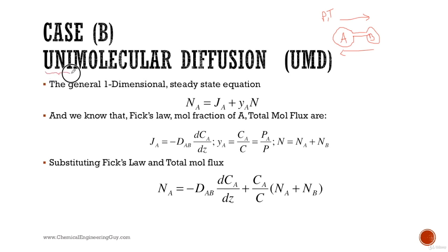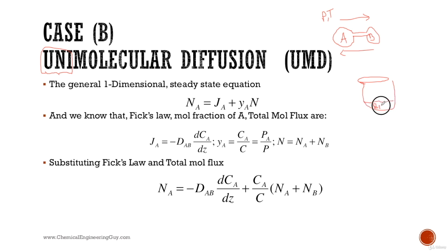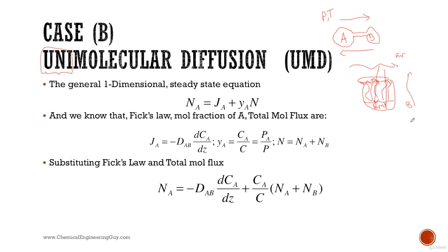In unimolecular diffusion, only one molecule or species undergoes diffusion. The easiest example is when you work in the lab using a volatile material like benzene or hexane — you know it's going to evaporate into the air. It's much more likely that benzene diffuses to the atmosphere than that air goes into the benzene. So we assume benzene goes from high to low concentration via diffusion.